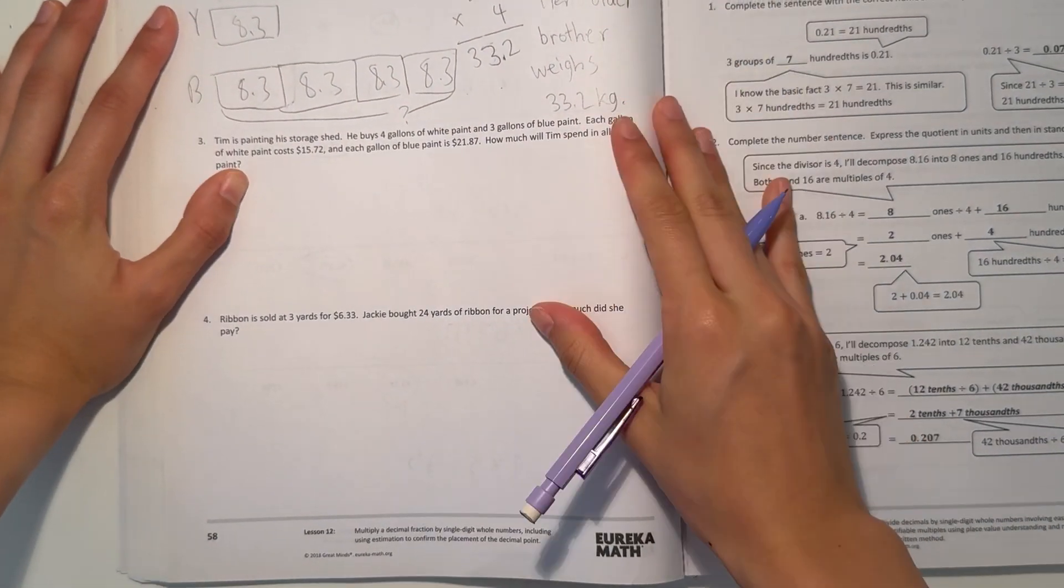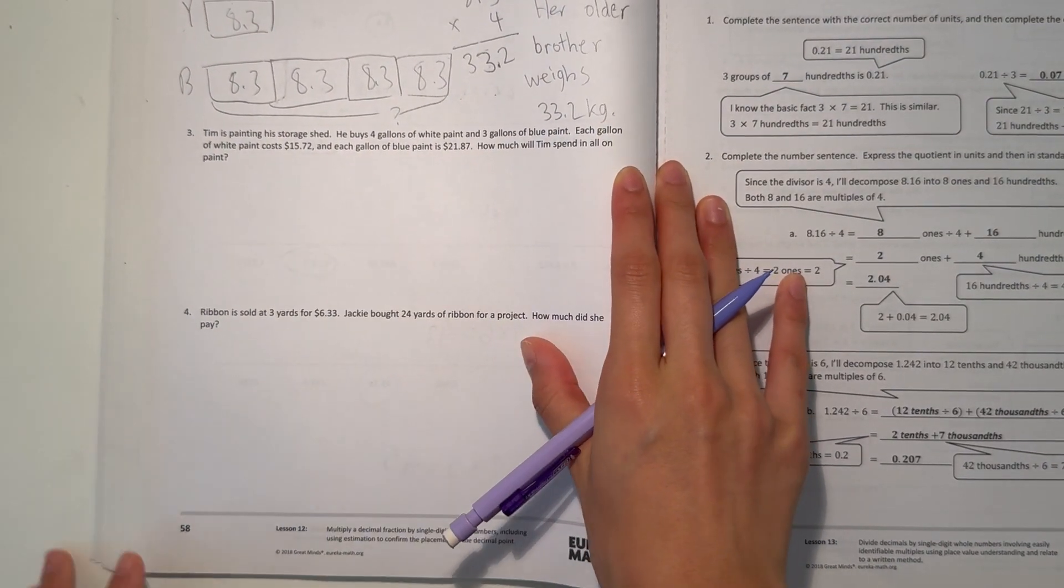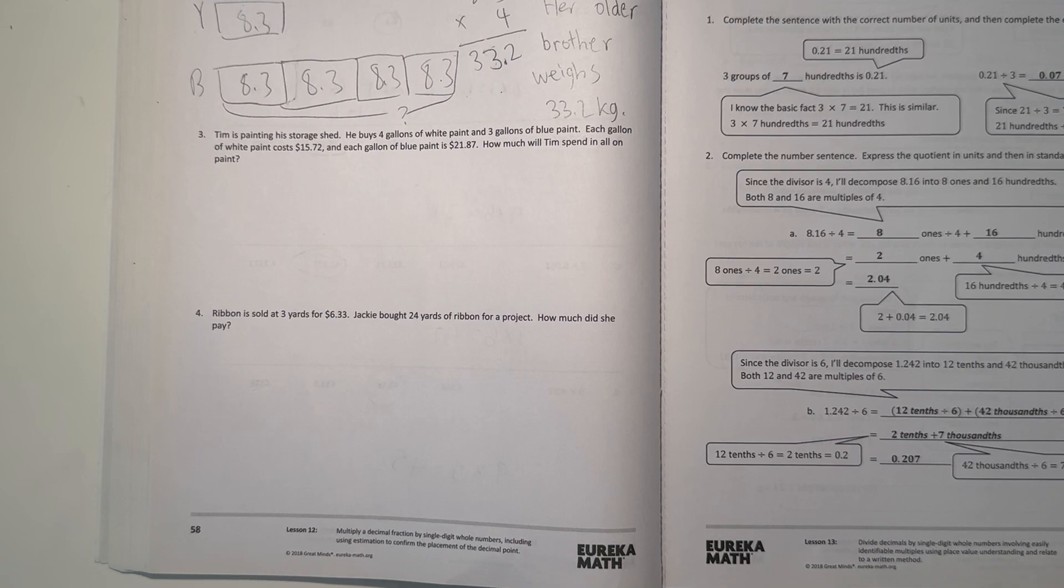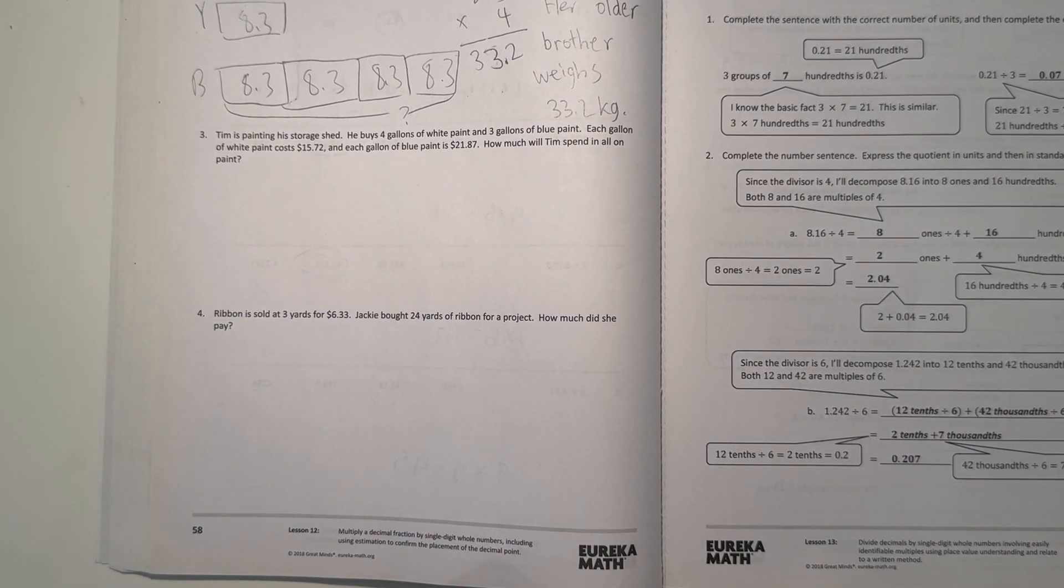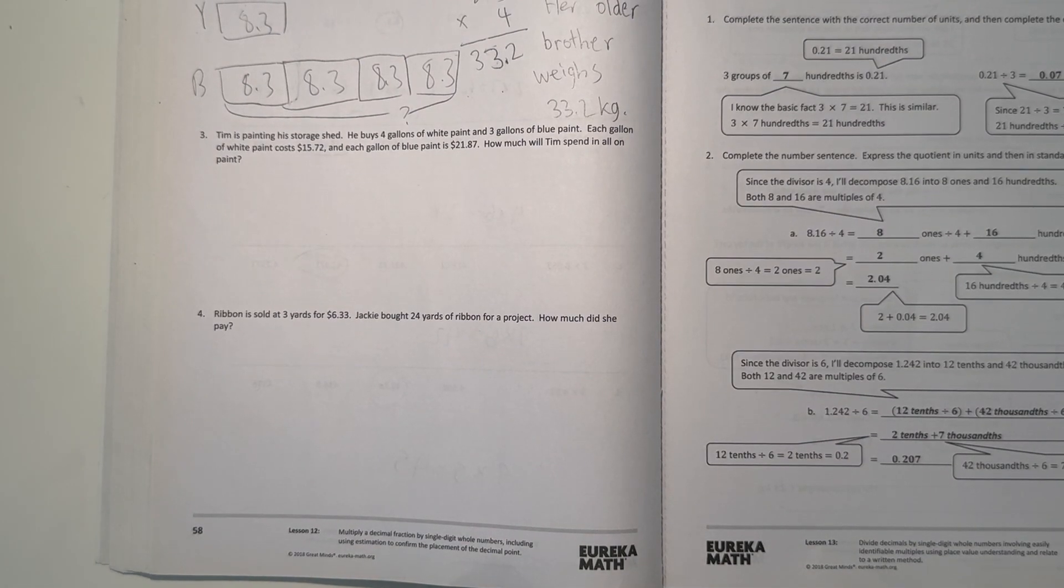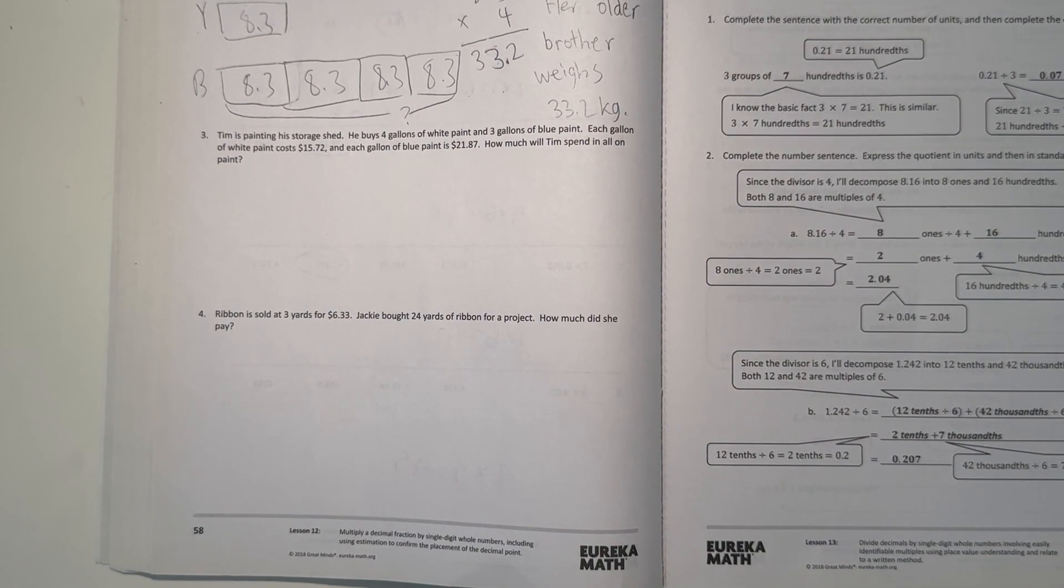Alright, and number 3. Tim is painting his storage shed. He buys 4 gallons of white paint and 3 gallons of blue paint. Each gallon of white paint costs $15.72. And each gallon of blue paint is $21.87. So how much will Tim spend on all the paint?